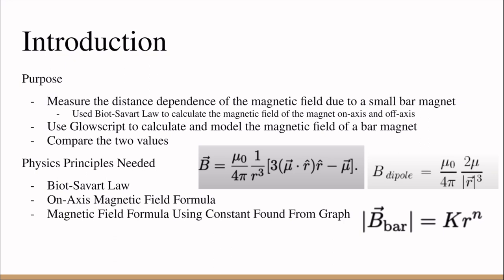We have to use GlowScript to calculate and model the magnetic field of a bar magnet, and then we compare the two values and see how they differ.